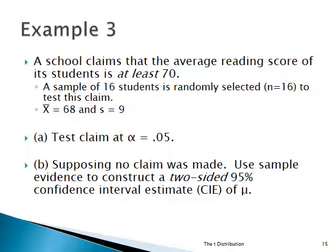We're going to do a different kind of t-test here — you'll see why it's a bit different. The school claims that the average reading score of the students is at least 70. Any more than 70 is fine. The problem is only in one direction — if it's below that, you want to make sure you're not looking at sampling error. We took a random sample of 16 students to test the claim, and found that the sample mean was 68 with a standard deviation of 9.